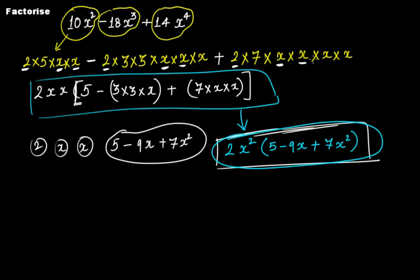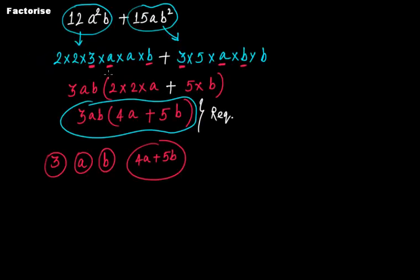You can take out the common factors. In the same way, in another example it was 2, 2, 3, A, A, B, then 3, 5, A, B, B. Here 3, 3, A, A, B, B — these three factors were common in these two terms. Therefore, you take out the common factor.